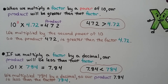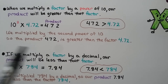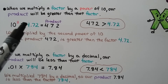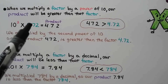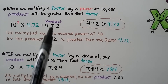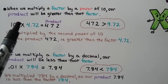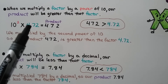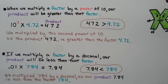When we multiply a factor by a power of ten, our product will be greater than that factor. We have 10 to the second power times 4 and 72 hundredths. Our product is going to involve the same numbers — a four, a seven, and a two — but it's going to be greater than that factor. We multiplied by the second power of ten, so the product, four hundred seventy-two, is greater than the factor four and 72 hundredths. It moved two hops to the right — one, two — so now we have four hundred seventy-two whole number.